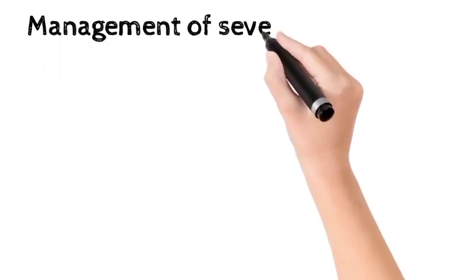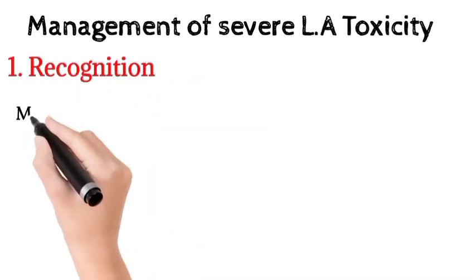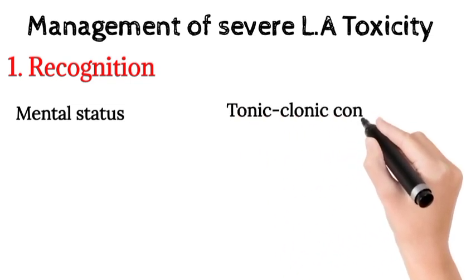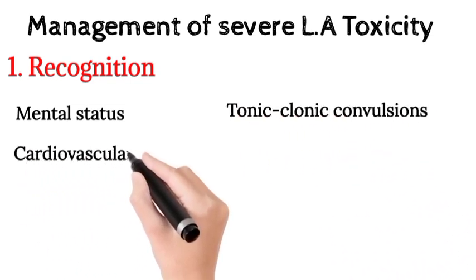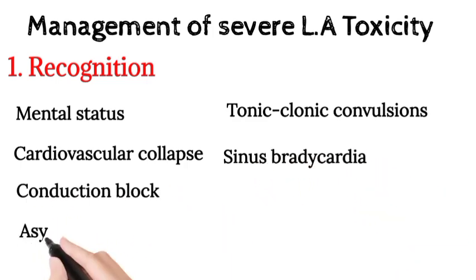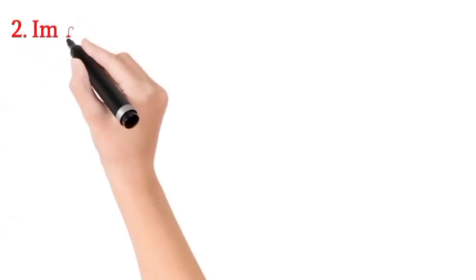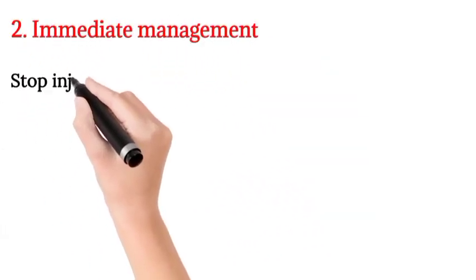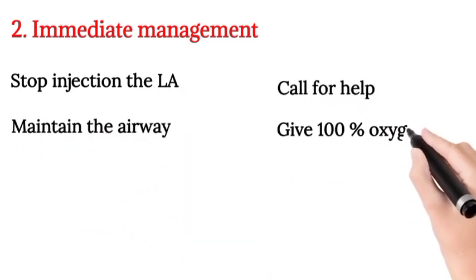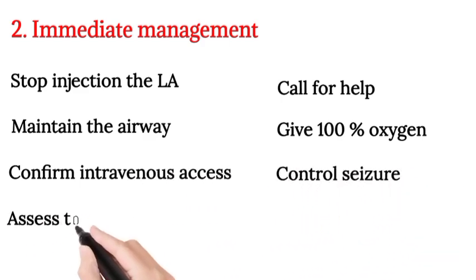Management of severe local anesthetic toxicity. Recognition: sudden alteration in mental status, severe agitation or loss of consciousness with or without tonic-clonic convulsions, cardiovascular collapse, sinus bradycardia, conduction block, asystole, and ventricular tachyarrhythmia. Immediate management: stop injecting the local anesthetic, call for help, maintain the airway, give 100% oxygen, confirm intravenous access, control seizures, and assess the cardiovascular status.